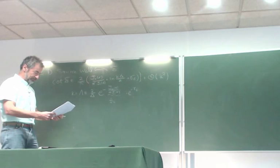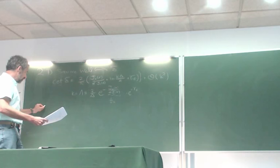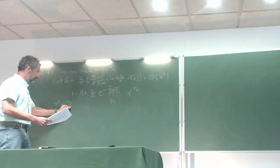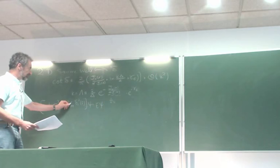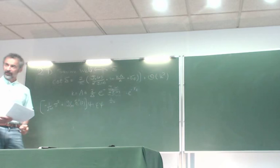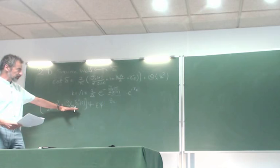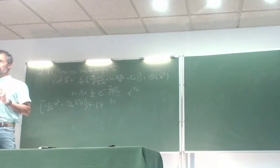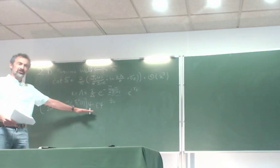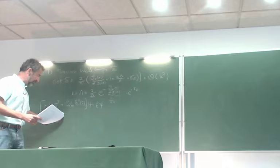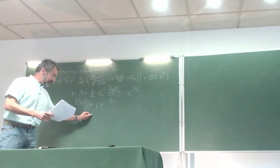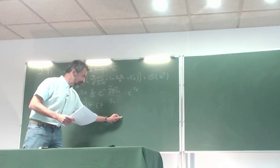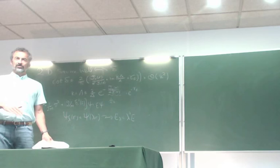The next step was to match this onto a Schrödinger equation with a delta function. The question is: can we find a coupling constant g that reproduces the same scattering at low k? I first pointed out that this Schrödinger equation has a funny property: if you find a solution ψ(r), you can find a rescaled solution ψ_λ(r) = ψ(λr), which has energy E_λ = λ²E. So there's no discrete spectrum.